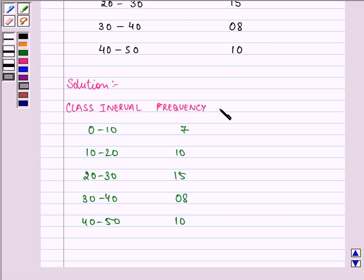Now, the next step is to find out the mid value that we see as x. It is the mid value of the class interval, that is 5, 15, 25, 35 and then 45.